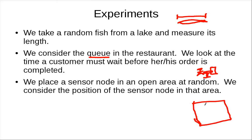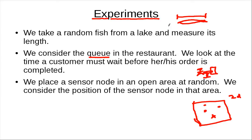Let's look at a third example. We have an area and we throw a sensor node into the area at random. The number of possible points in this area is uncountably infinite. All three experiments share the same concept: the random variable we are looking at is always a real number, and real numbers are uncountably many.